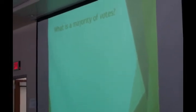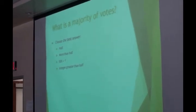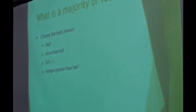Now, two other things I want to mention. What is a majority of votes? Very interesting question, because often we don't get this exactly right. Those are the four choices: majority means half; more than half; 50% plus one; or integer greater than half. Half is incorrect — half is not a majority. More than half is correct but imprecise. 50% plus one is only sometimes correct.